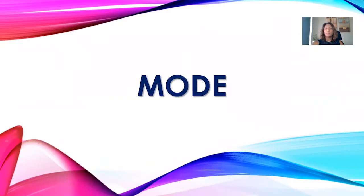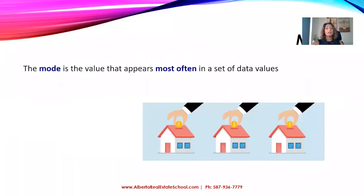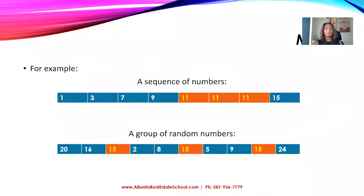First of all, mode. What is the mode? Mode is the value that appears most often in a set of data values. For example, let's say we have a sequence of numbers. In the first set, we see that the number 11 is repeated three times. This is the number that appears most often, therefore number 11 is the mode in this case.